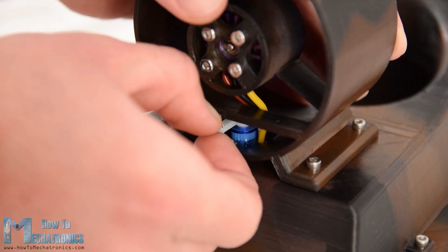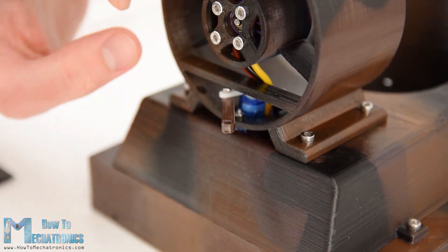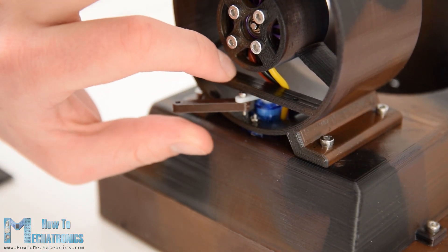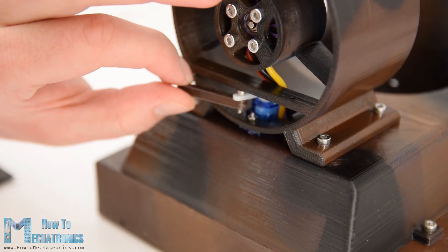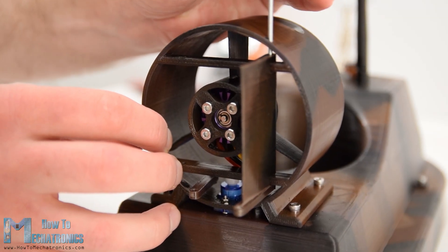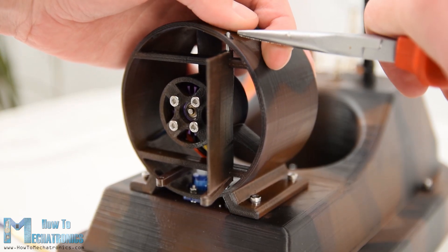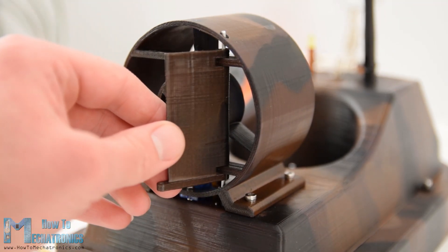I continued with installing the steering system. First I connected a small link to the servo horn using M2 bolt and nut. Then I inserted the first rudder in place and secured it to the thrust housing using a 2mm metal wire which passed through its body so the rudder can rotate around it.